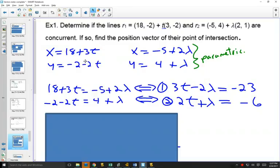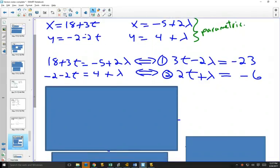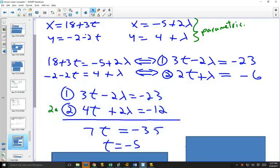If you do that, you still have two variables you don't know: t and lambda. So now that you've got two equations with two unknowns, you could either set things up with substitution or elimination to solve. In this case, I took equation number two and multiplied it by two. I'm going to use elimination.